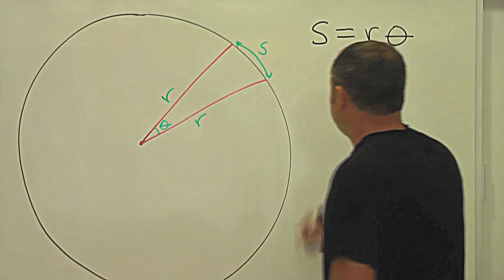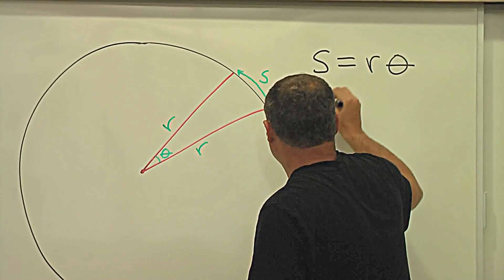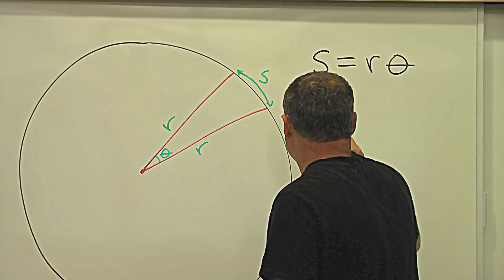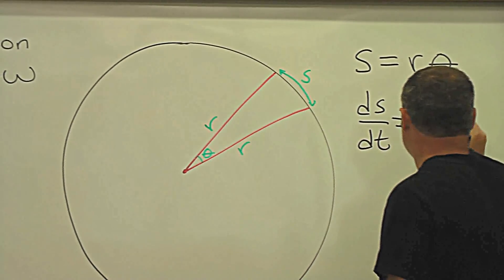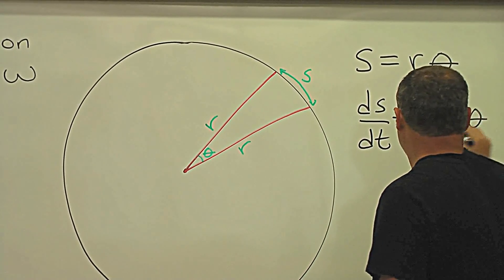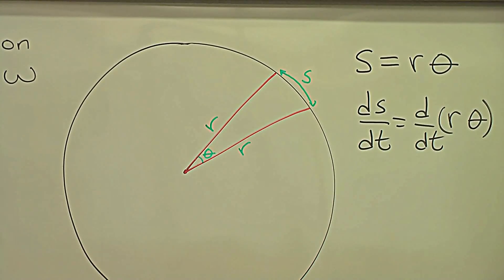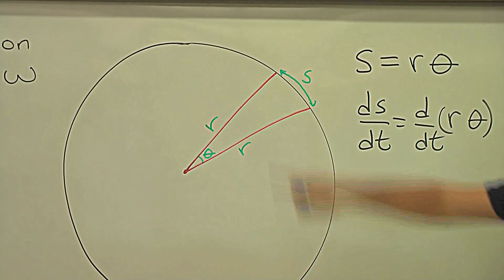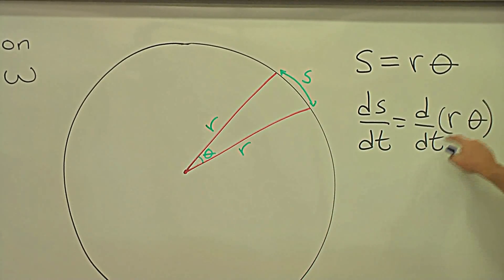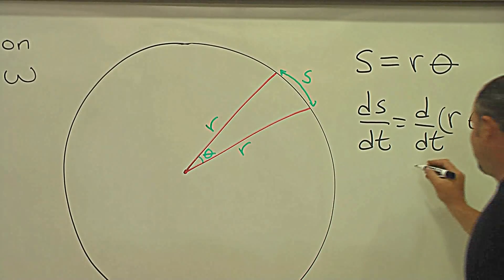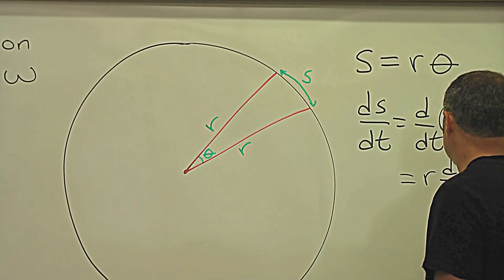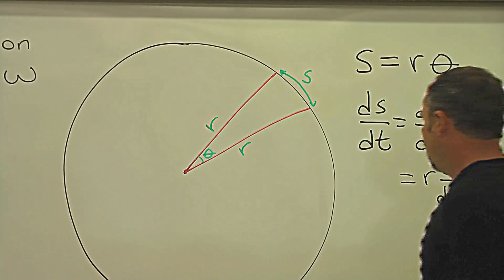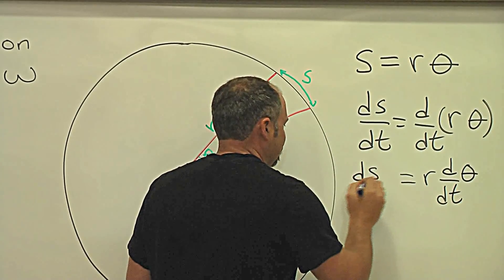And if we take the derivative of both sides, we get ds/dt is equal to d/dt of r theta. Well, the radius of this circle does not change with time, so it can pop out of the derivative. And on this side, we still have the ds/dt.